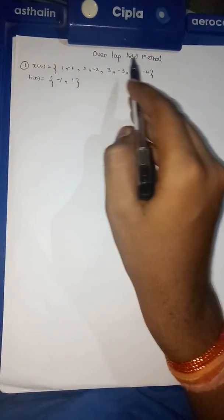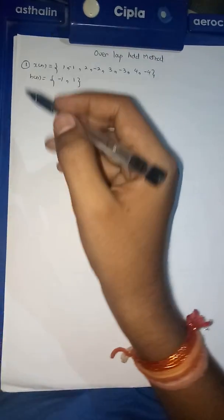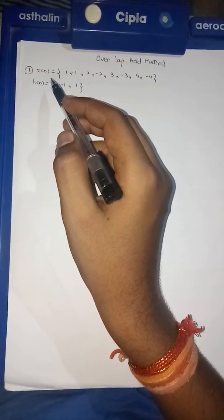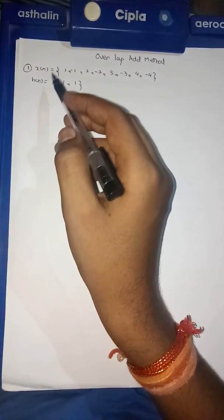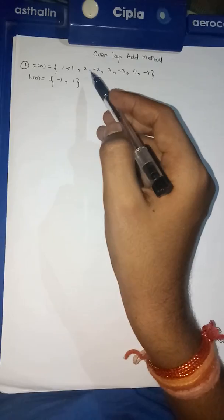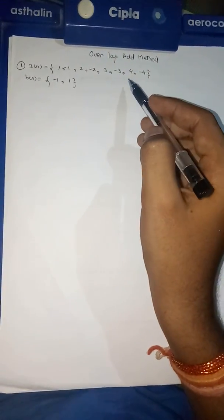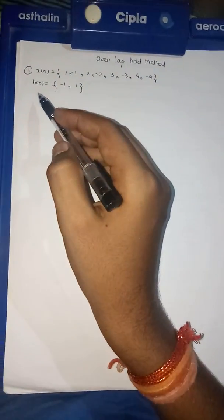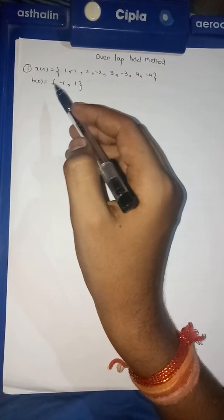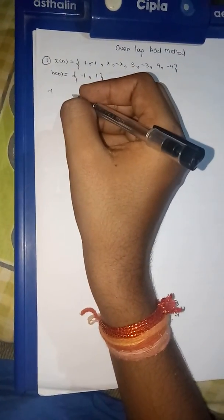In this video, let us find out the linear convolution by using the overlap-add method. Let's take an example where x[n] = {1, -1, 2, -2, 3, -3, 4, -4} and h[n] = {-1, 1}. Let's find out the linear convolution.